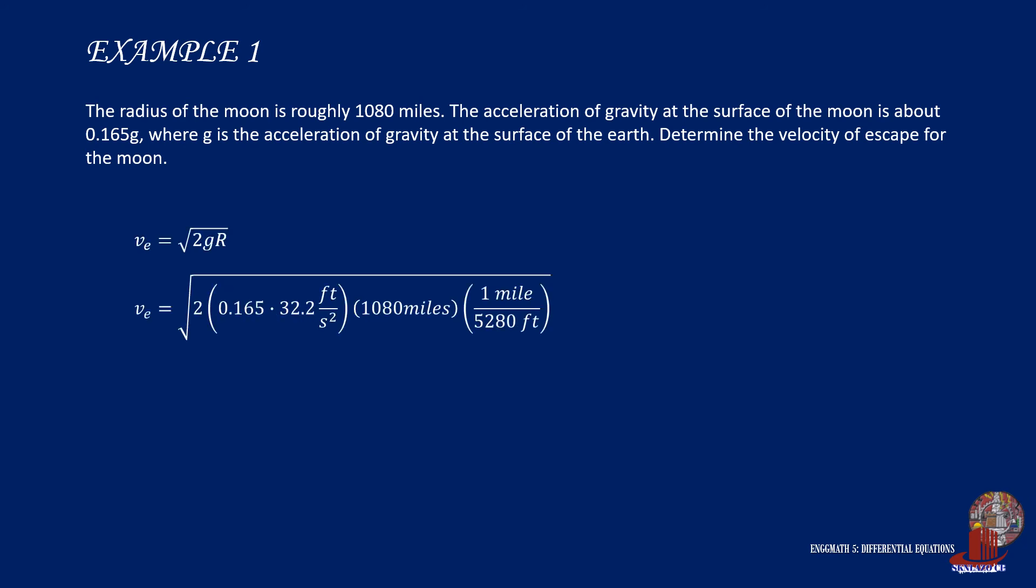Since we have derived the formula for VE, we can just plug the given values 0.165 of g, which is 32.2 feet per second squared, and this is multiplied by 1080 miles as given by the problem. Before taking the root, note that the conversion of units should be used for feet and miles, so we get the escape velocity as 1.47 miles per second.